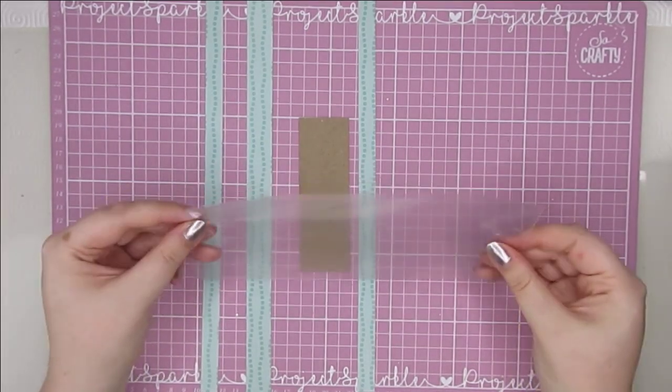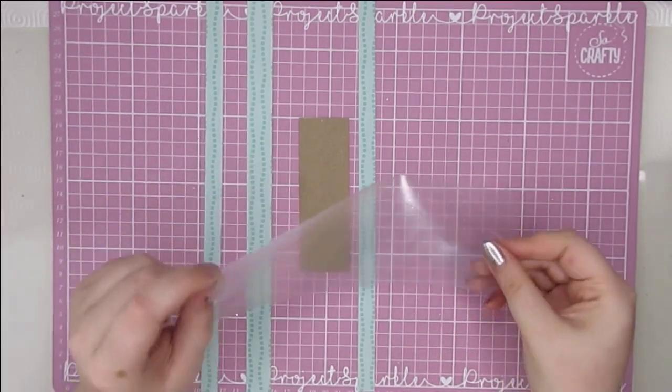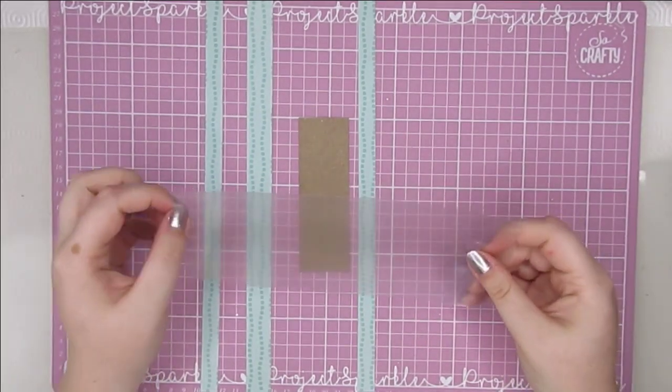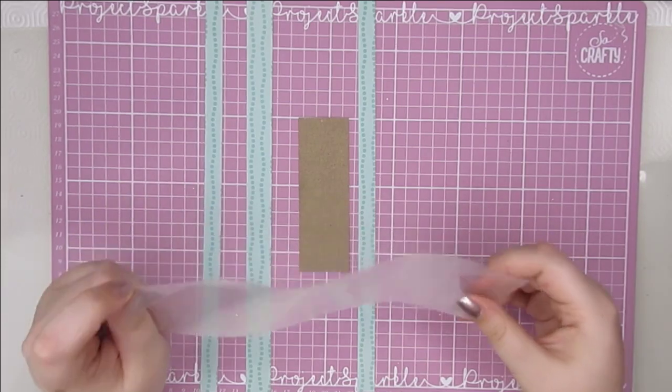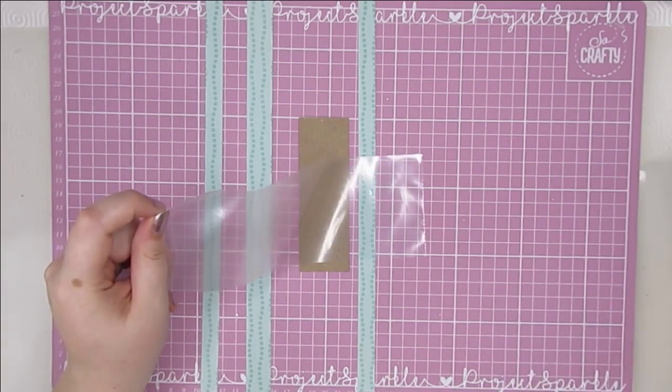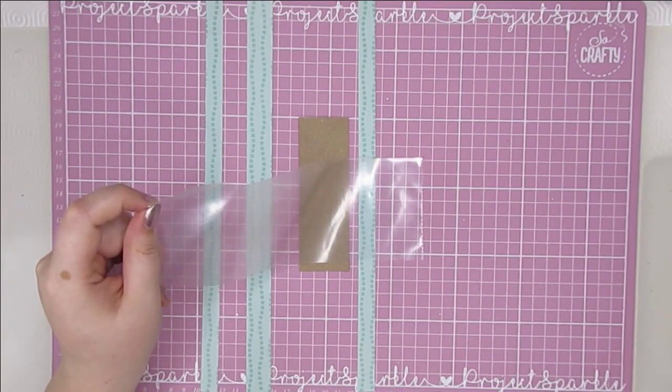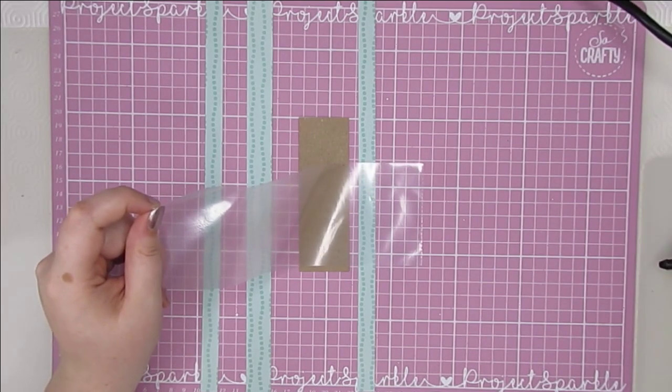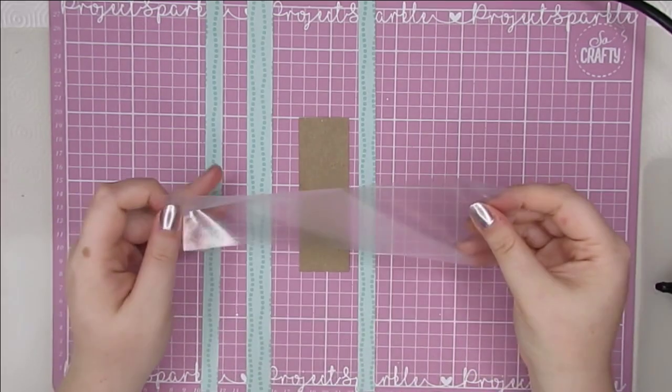So those are the measurements I've worked with but obviously you can go for bigger or smaller or whatever, this works either way. I will be using a sewing machine for this but you totally don't have to. You could definitely just do it with tape or glue or any adhesive that you wish. Just turn my hot glue gun on to make the box.